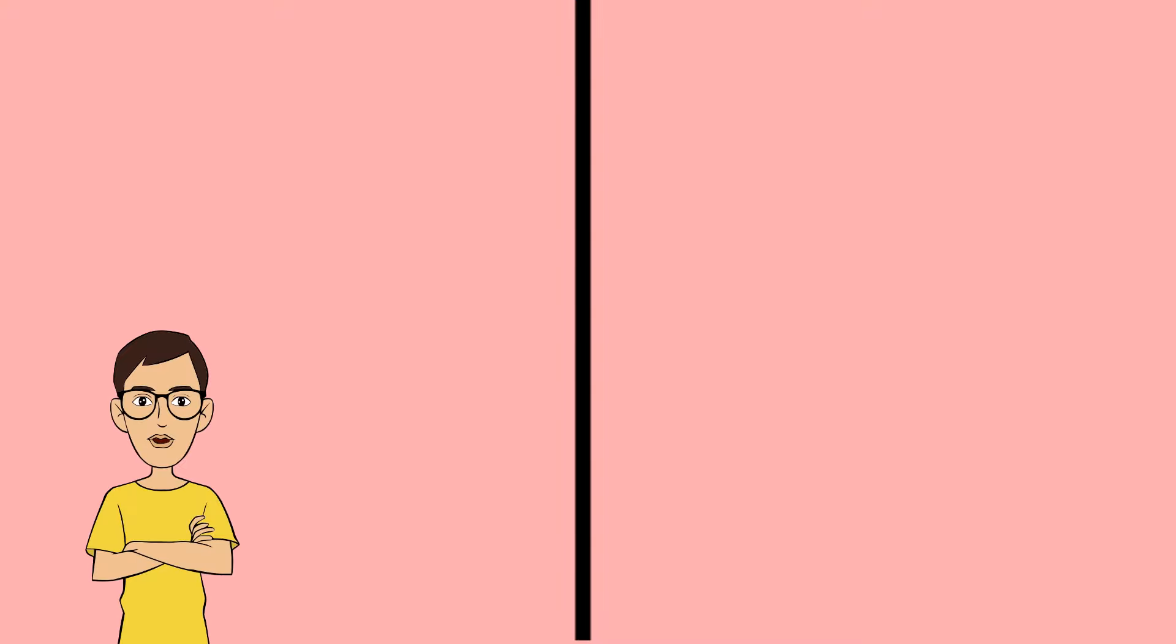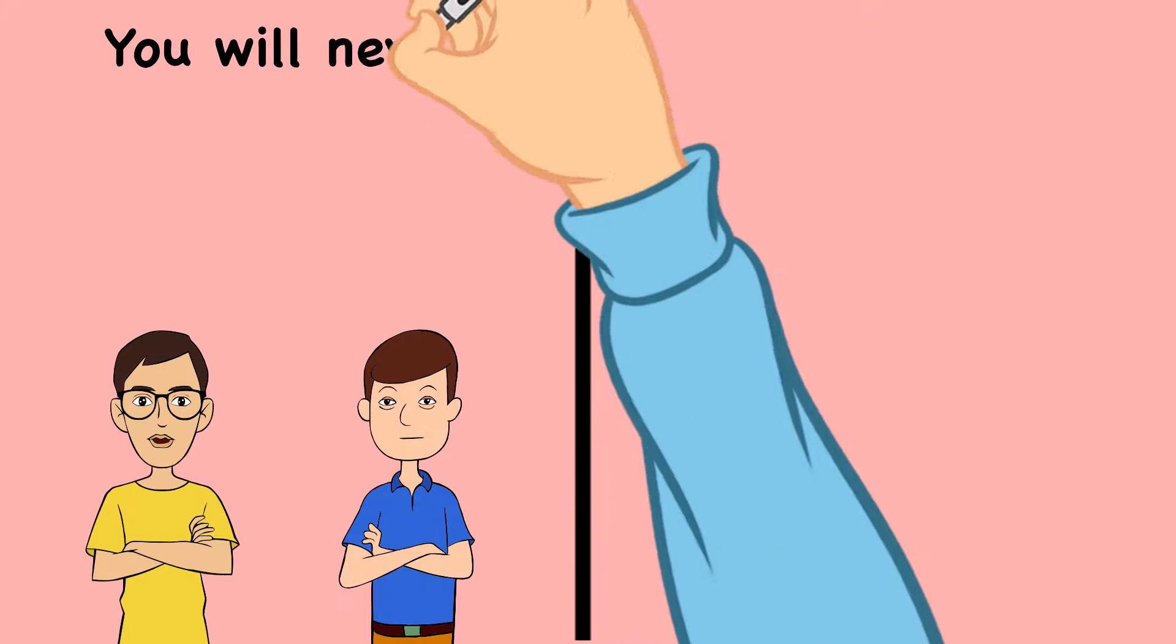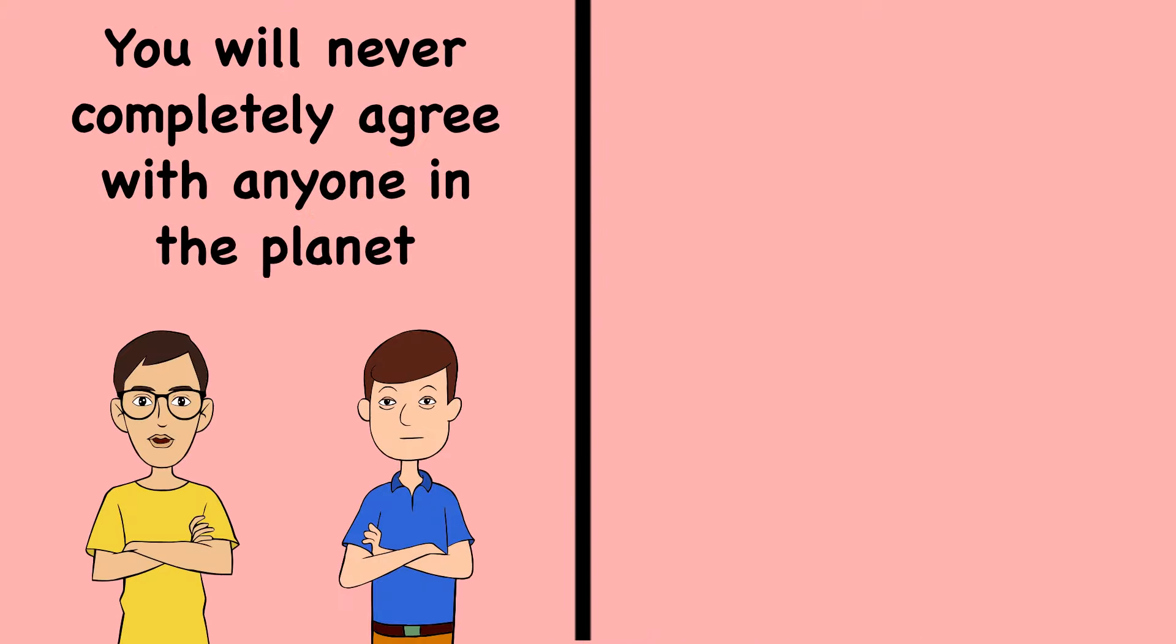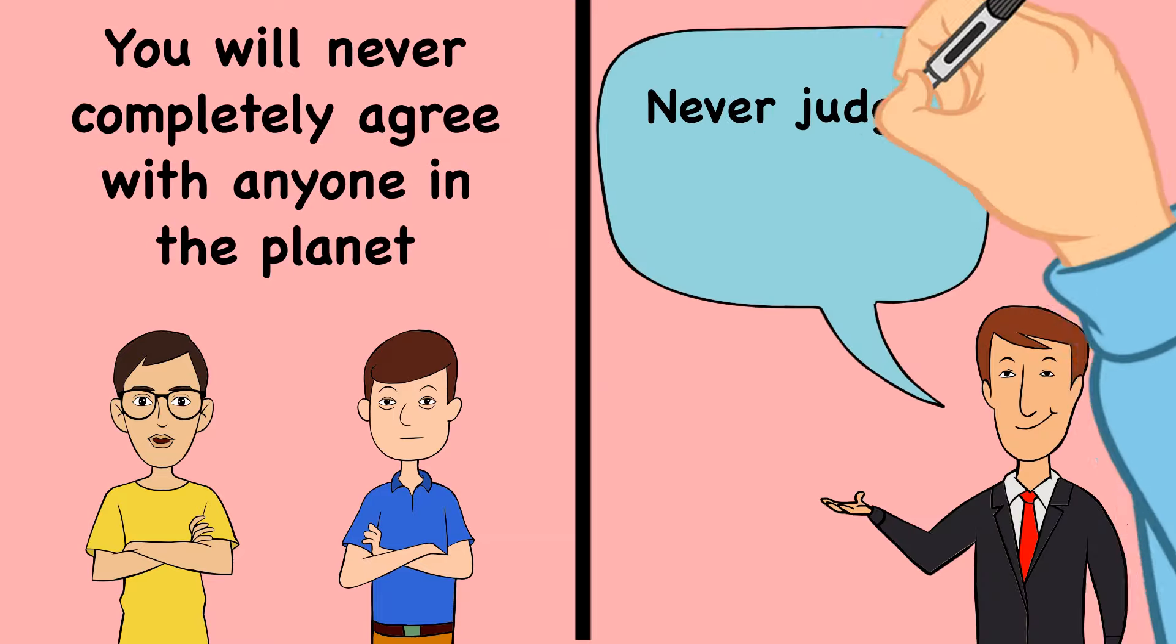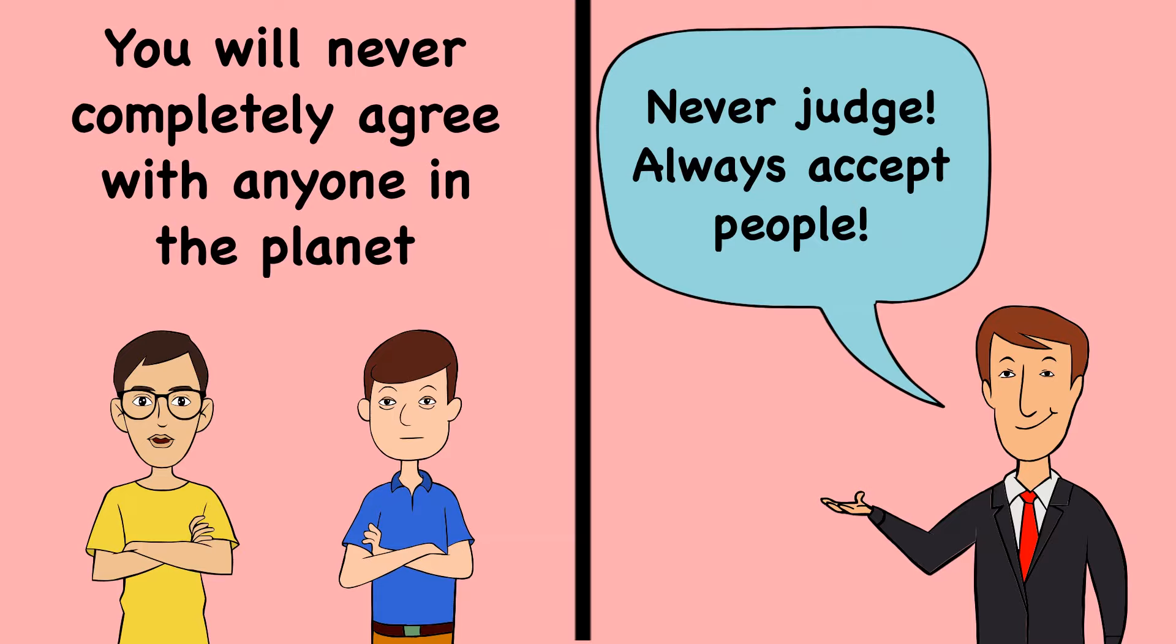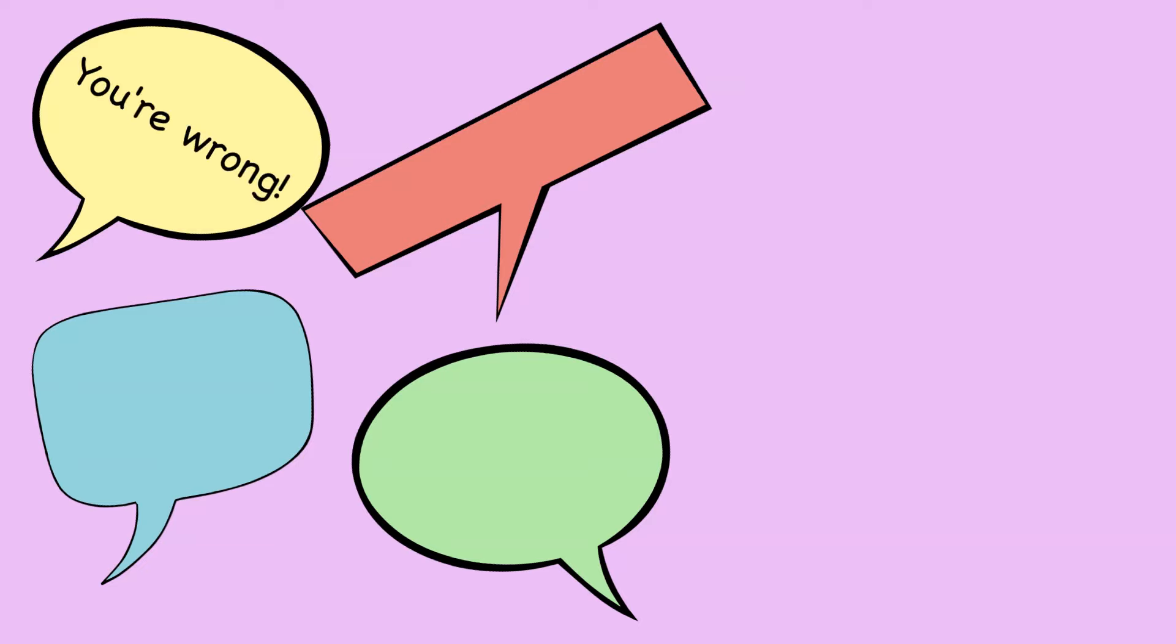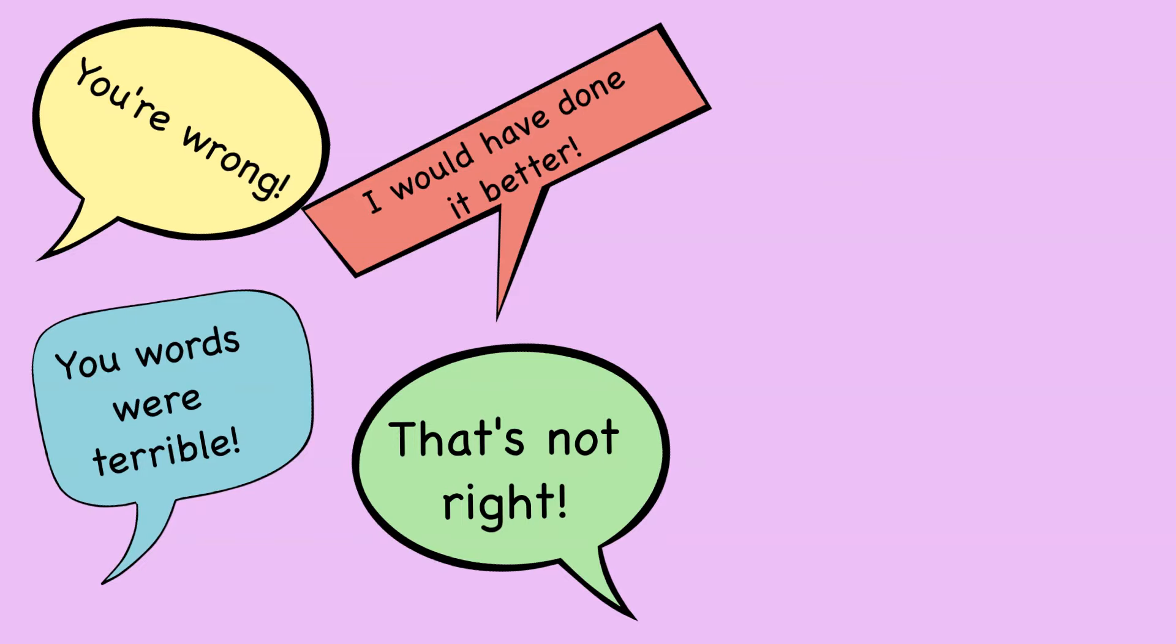You don't have to agree with the other person for them to open up to you. You will never completely agree with anyone on the planet and that's why it's very important to never judge something that anyone says, especially if it's something vulnerable that they are sharing. When you verbally tell another person that they are wrong or you criticize them, you are disqualifying their feelings, which is basically rejecting them.